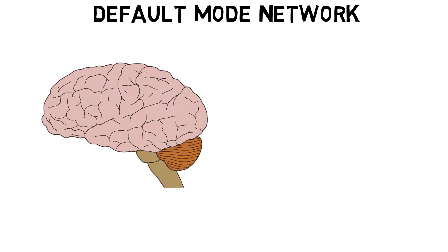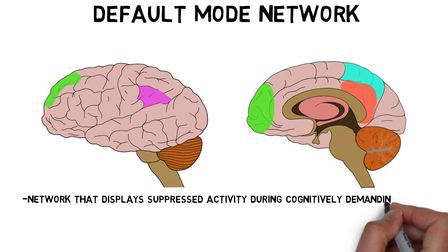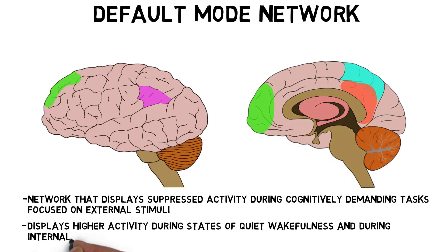Default mode network is a term used to describe interconnected regions of the brain that display suppressed activity during cognitively demanding tasks focused on external stimuli, and higher activity during states of quiet wakefulness and when someone engages in internally focused thought such as daydreaming or the recall of personal experiences.